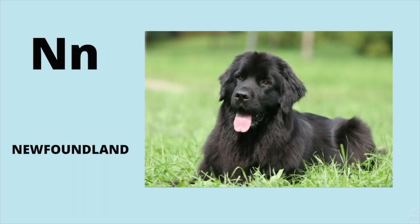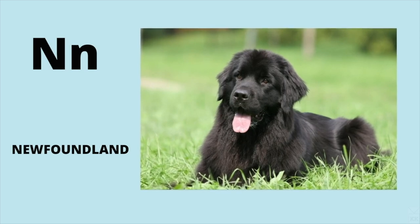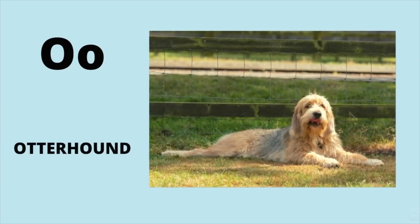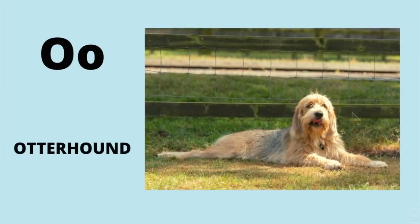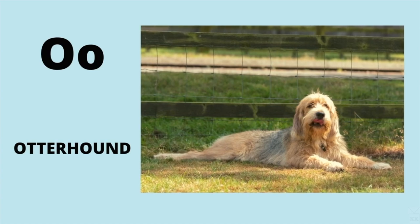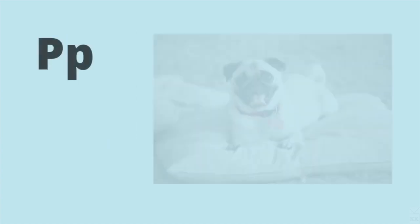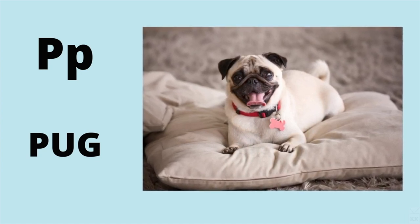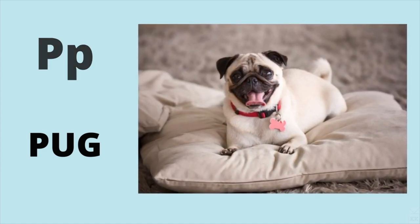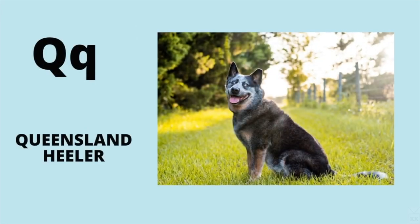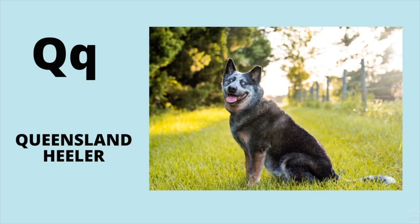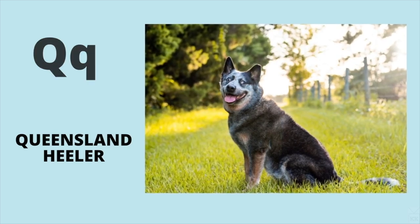N is for Newfoundland. N, Newfoundland. O is for Otterhound. A, Otterhound. P is for Pug. P, pug. Q is for Queensland Heeler. Q, Queensland Heeler.